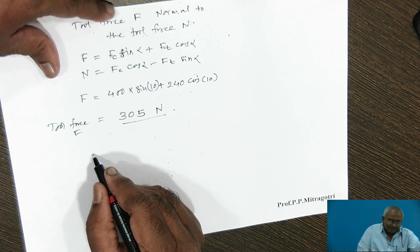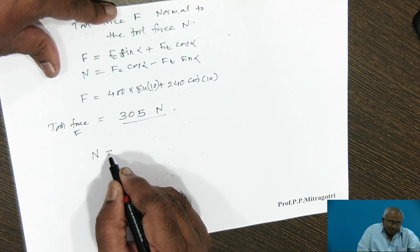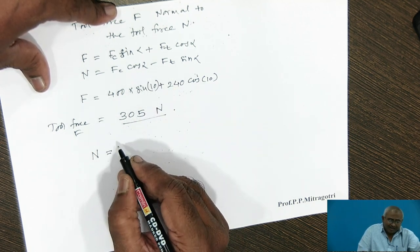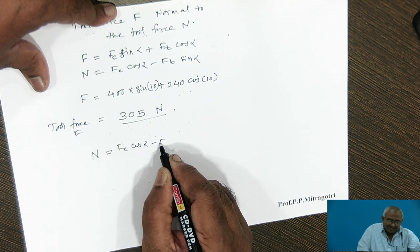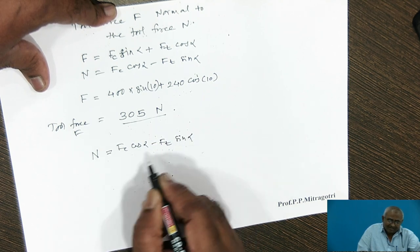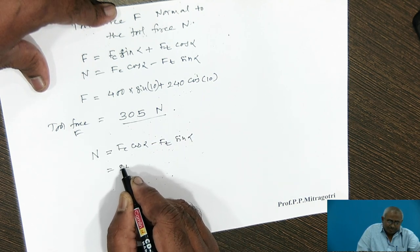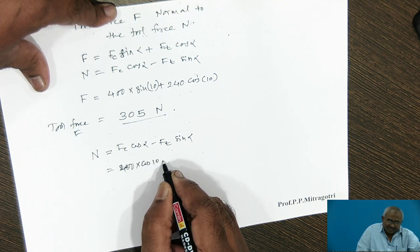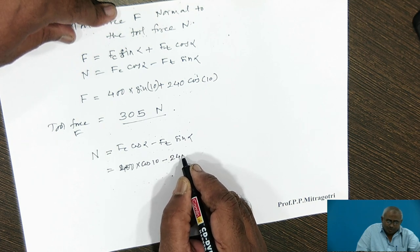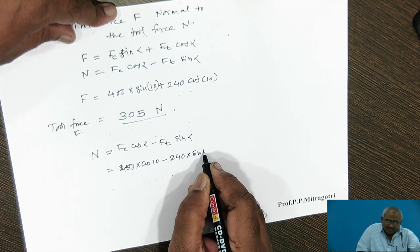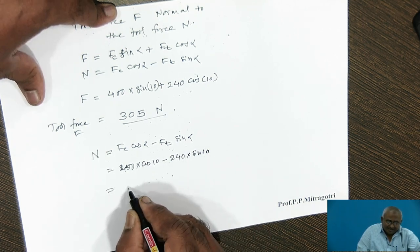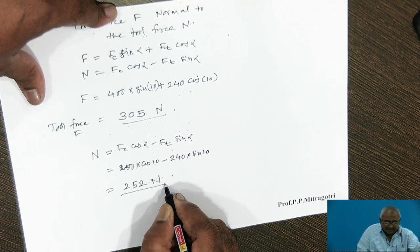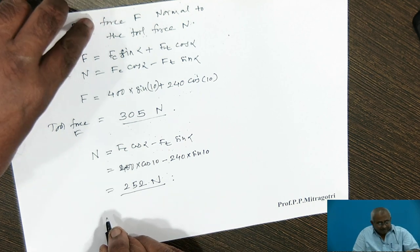Next, we calculate the normal to the tool force N, given by the formula: N = Fc cos alpha minus Ft sin alpha. Substituting Fc = 400 N, cos 10°, and Ft = 240 N, sin 10°, the value of N comes out to be 252 newtons.